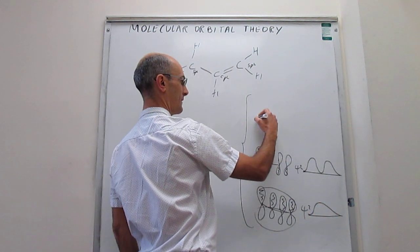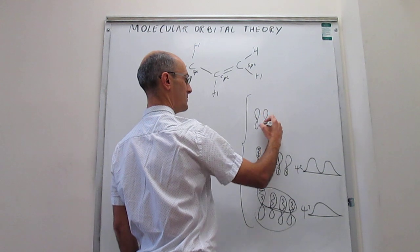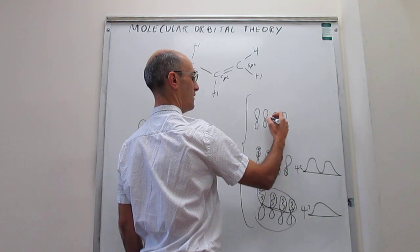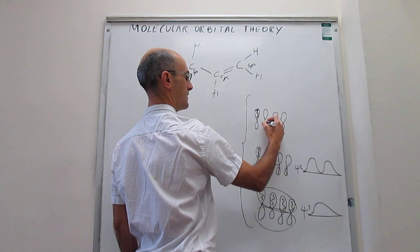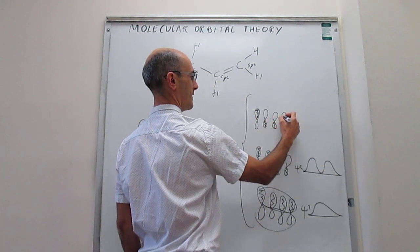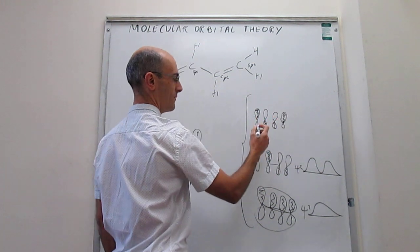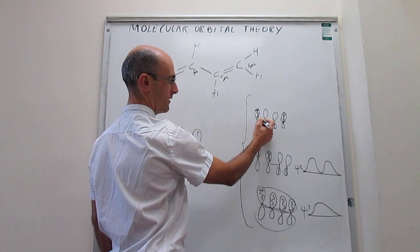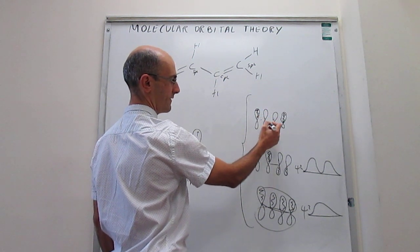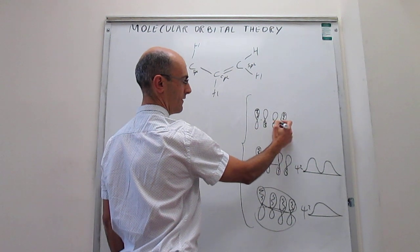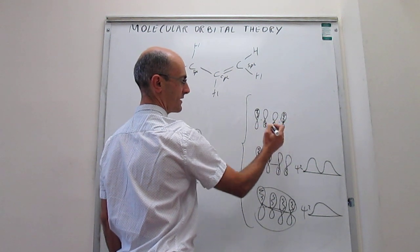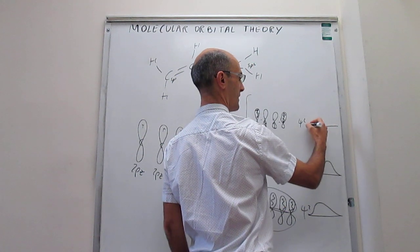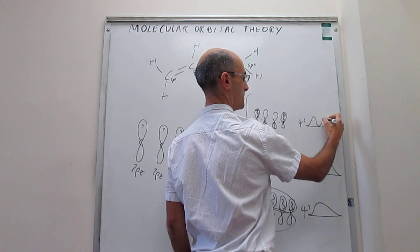The third molecular orbital has orbitals one, two, three, four with two nodes — the wave function changes sign between atoms one and two, and again between atoms three and four. Drawing the probability distribution for that orbital gives a shape with two nodes.